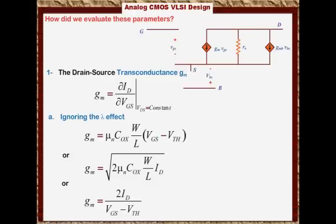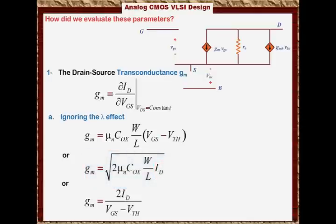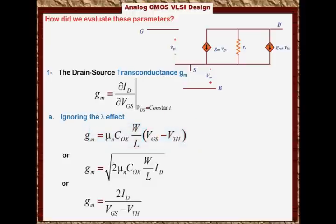This is very interesting: G_M is proportional to the square root of the current. So if you increase the current by a factor of 4, G_M increases by a factor of 2. That is a very interesting property we will explore later. Also, G_M increases linearly with V_GS — by increasing V_GS, you linearly increase G_M. These are important parameters to look into later.